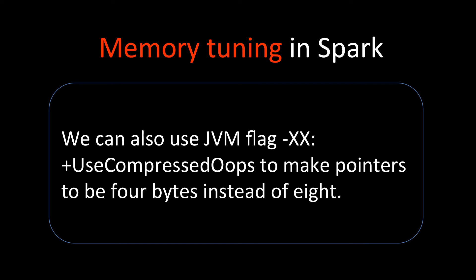Last but not least, there is a JVM flag — if you are conversant with Java — the JVM flag `-XX:+UseCompressedOops` for the Java process runtime environment. By using this, all pointers can be made four bytes instead of eight bytes. If we are using a master data structure which has pointers, those pointers are unnecessarily taking eight bytes; we can compress them to four-byte pointers. That is another good option to do memory tuning in Spark.